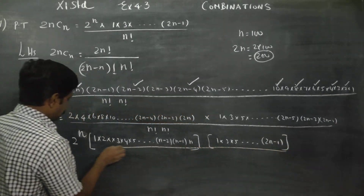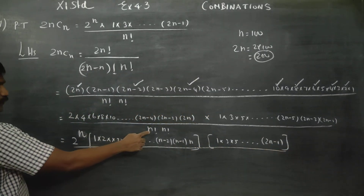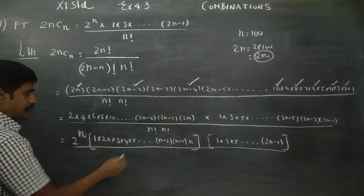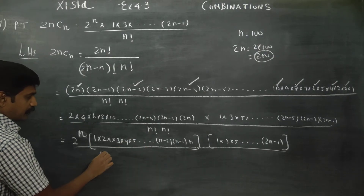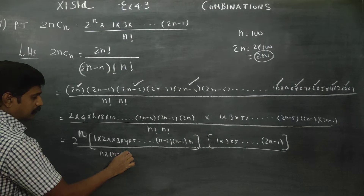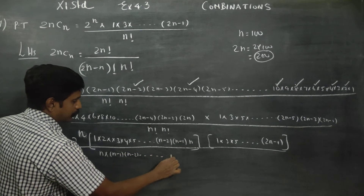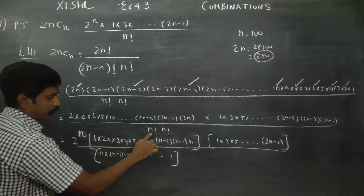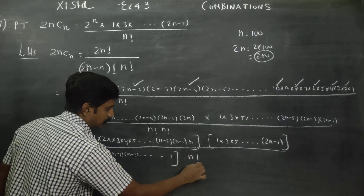All divided by n factorial. Now n factorial, written in descending order, is n into n minus 1, n minus 2, dot dot dot, up to 1. This is n factorial into n factorial.